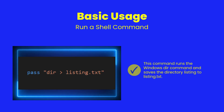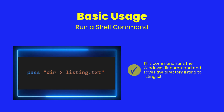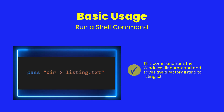Here you see the basic use of pass. The string inside the quotes is the shell command. In this case, we're writing a directory listing to a file named listing.txt. The SheerPower program sends this command directly to the OS.